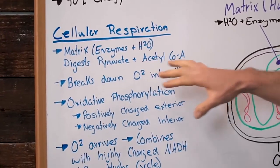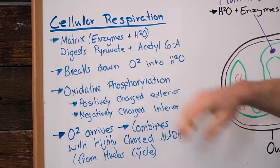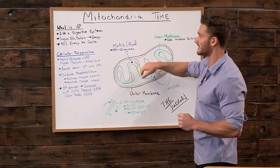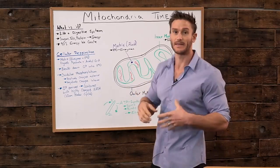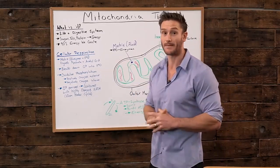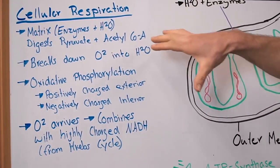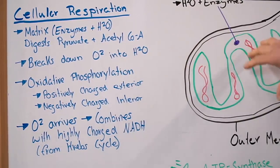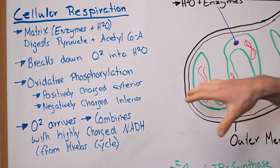It all starts with cellular respiration, and that's what we're going to focus on today. It all starts with the matrix, which again is this liquid portion that's the enzymes and the water. They end up digesting the pyruvate or the acetyl coenzyme A that is broken down from the sugars, fats, and protein. They break it down even more, and then it combines with enzymes in this fluid.